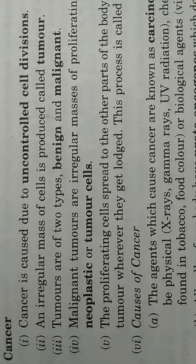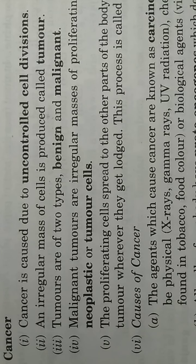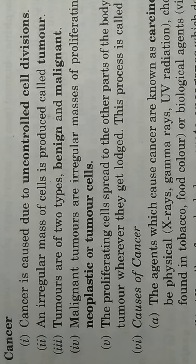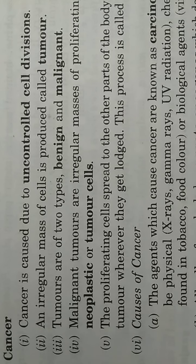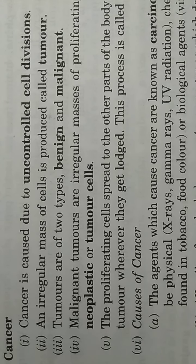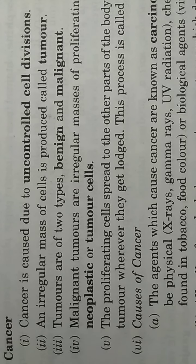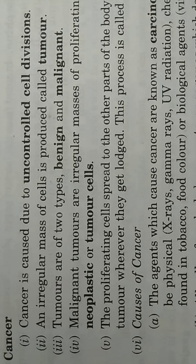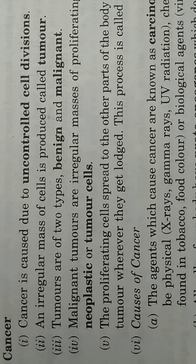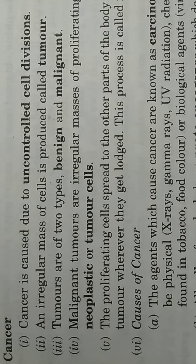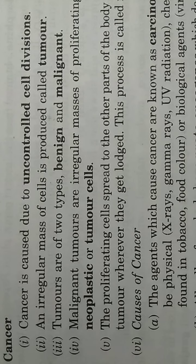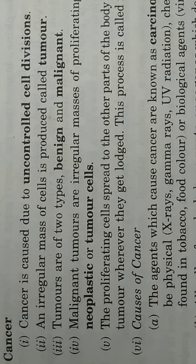Hello everyone. Now this time we are going to continue our chapter 8, that is Human Health and Disease. This is for class 12 students. In our previous class, we learnt about the immune system, its components, AIDS, and its preventive measures. So now our topic for this time is cancer. Let us have a look in detail about cancer.